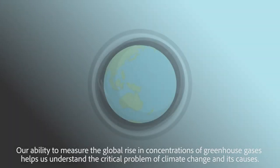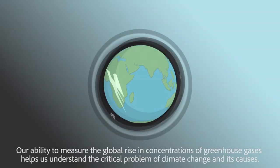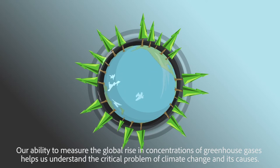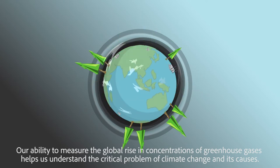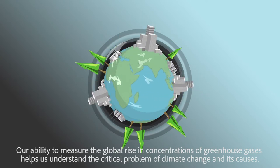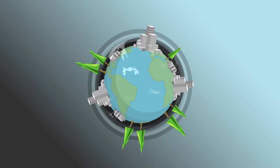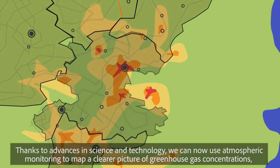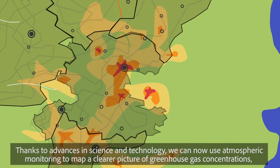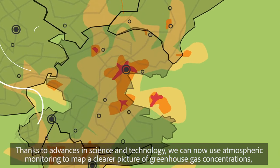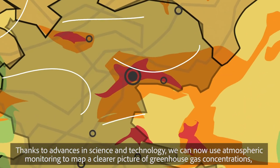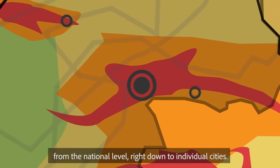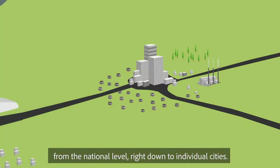Our ability to measure the global rise in concentrations of greenhouse gases helps us understand the critical problem of climate change and its causes. Thanks to advances in science and technology, we can now use atmospheric monitoring to map a clearer picture of greenhouse gas concentrations, from the national level right down to individual cities.